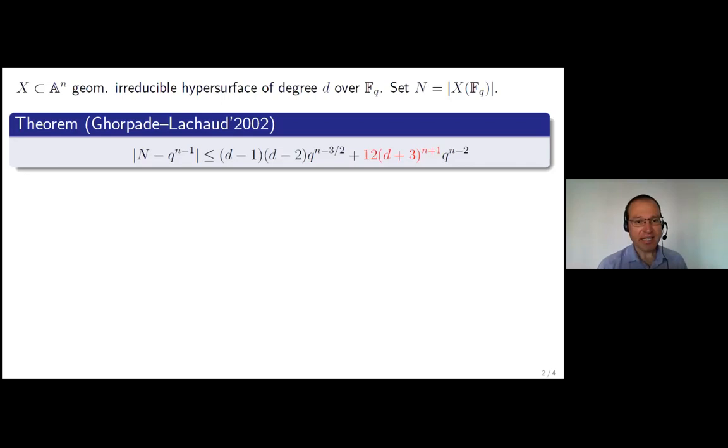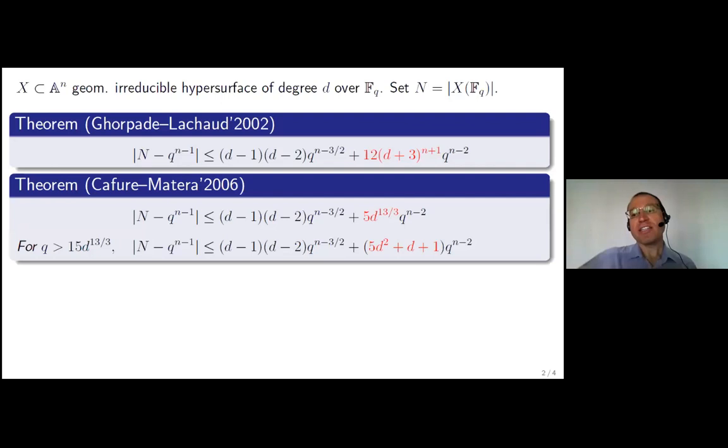Next, Cafure-Matera give a bound of degree which does not grow with N, using more elementary tools. Namely, you can put 5D to the 13/3. And if Q is large, if Q is greater than 15D to the 13/3. Now, think of this 13/3 as just a little bit more than 4. I said that we are concerned with the range Q greater than D to the 4th. That's when Lang-Weil makes most sense. And then, for that range, you can make it quadratic in D.